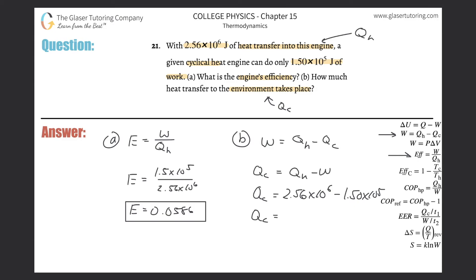And what do we get? So we have 2.56 times 10 to the 6th, minus 1.5 times 10 to the 5th. And here we go, about 2.41. So 2.41 times 10 raised to the 6th, and that is in terms of joules.